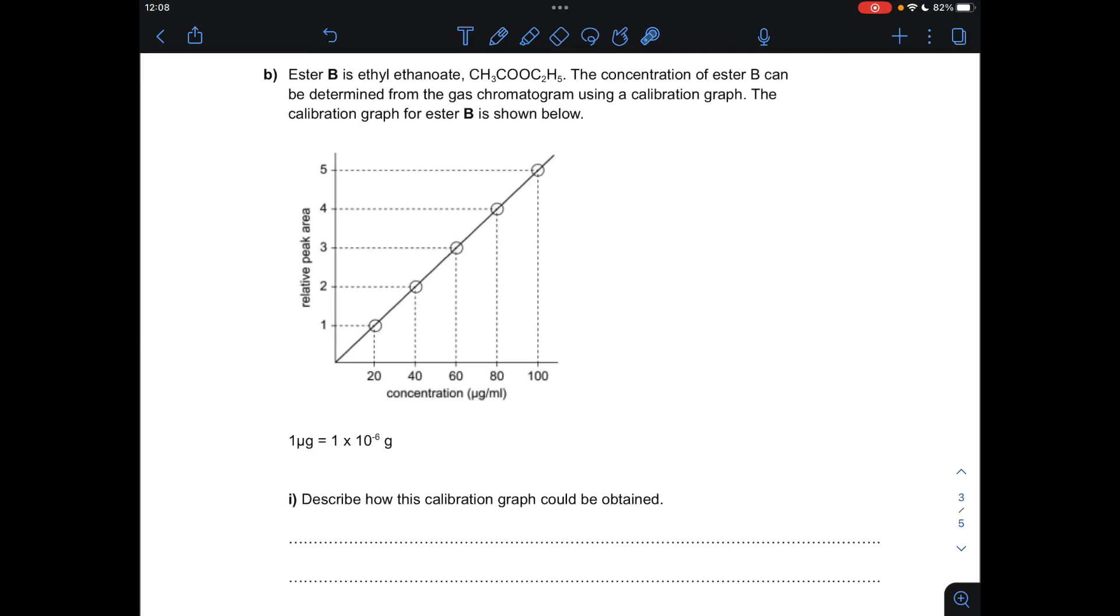Moving on to part B, which deals with the calibration graph. The first thing we're going to do is describe how this could be obtained. The first thing you would do is make standard solutions or known concentration solutions of the ester. So using the values here on this x-axis, you could make 20 micrograms per milliliter, 40, 60, 80, 100.